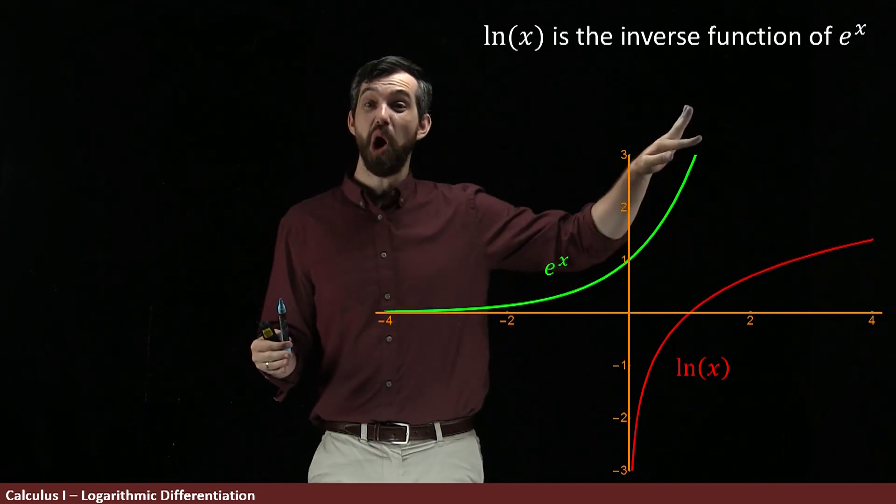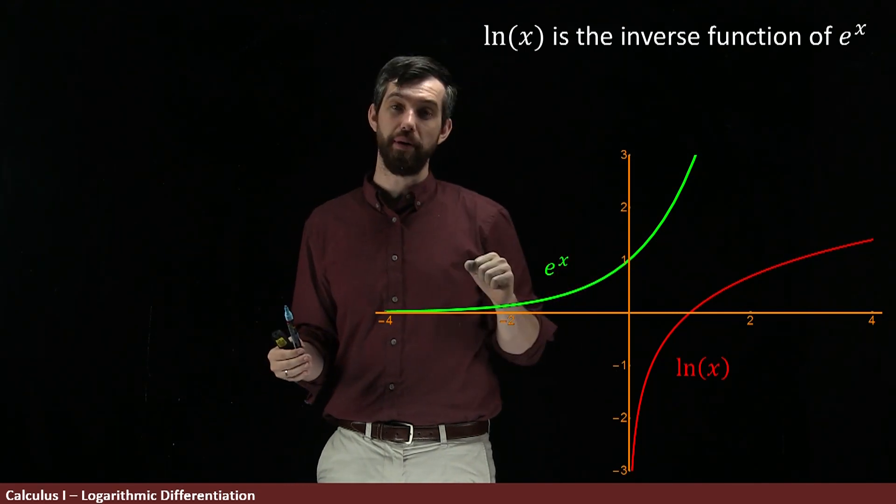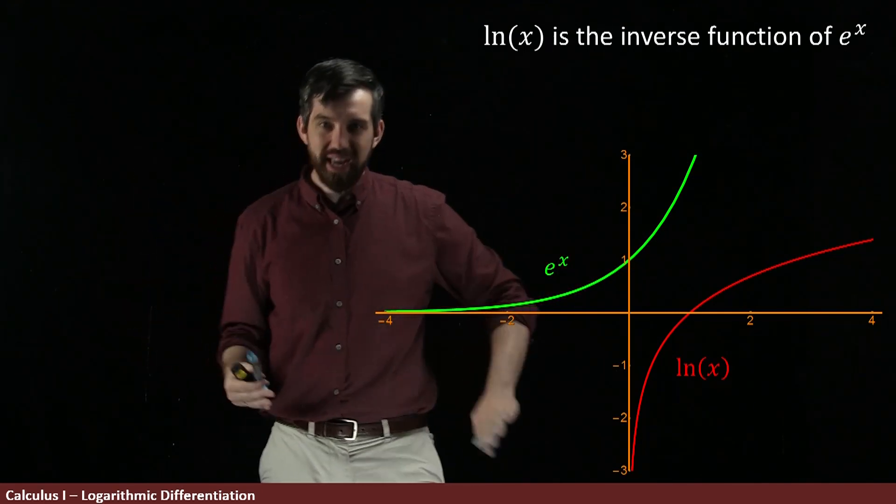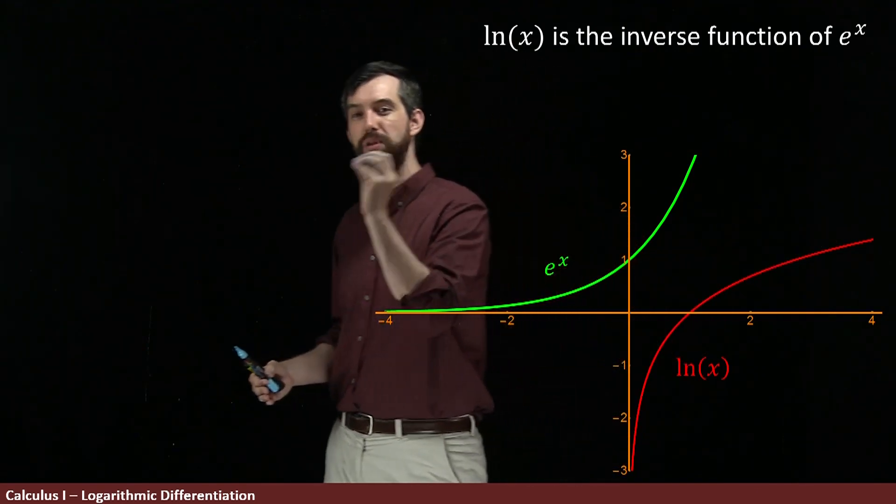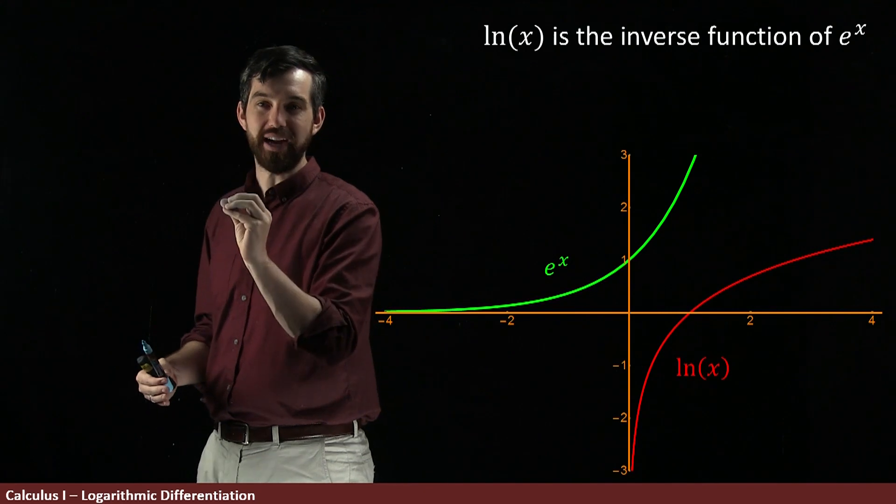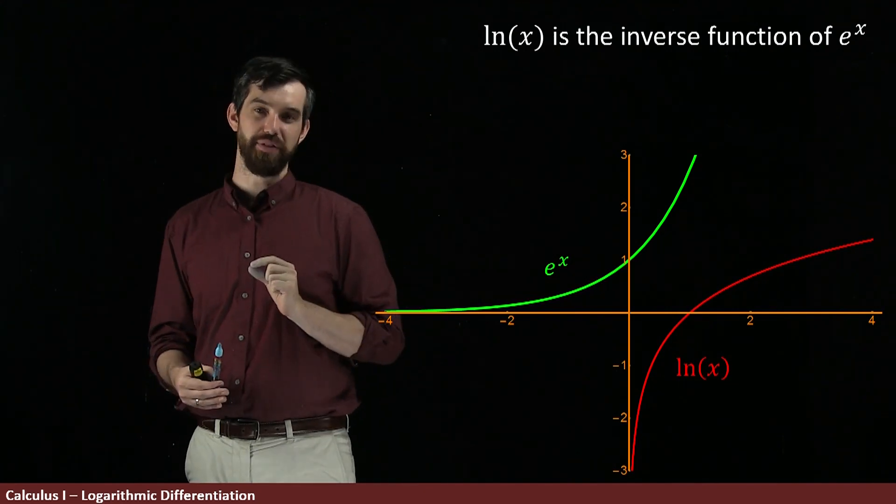e to the x can only be a positive number. And what this results in is that the domain of its inverse can only be positive numbers. I can only compute the natural logarithm of x when x is going to be a positive number.